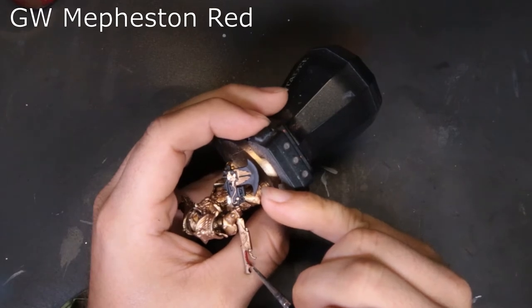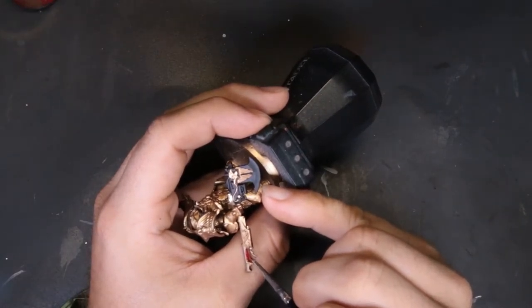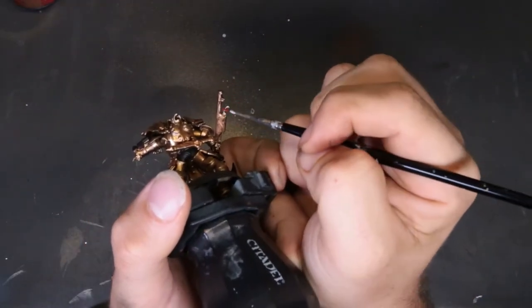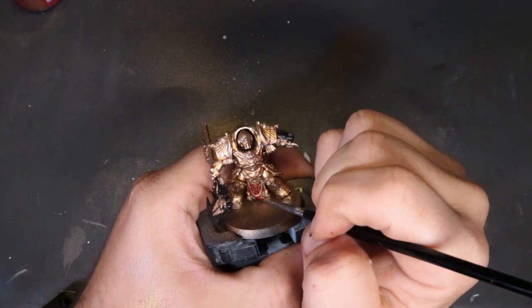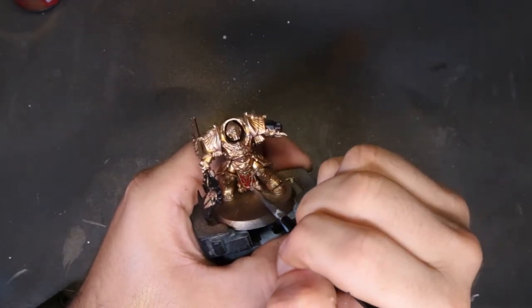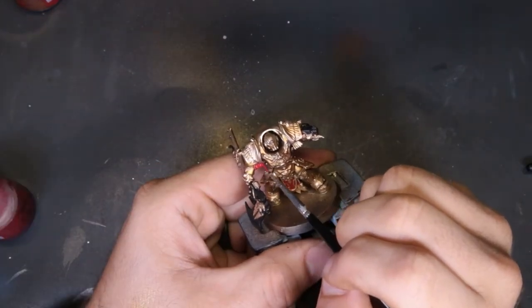So next we move on to Mephiston Red. There's very few scattered details around this model in the actual red. However, just check the box art, take a look at it there. You can actually see the secondary trigger I was talking about. We're going to hit his front loincloth and then he's got some tassels hanging from his pauldrons.